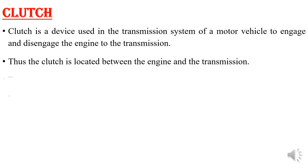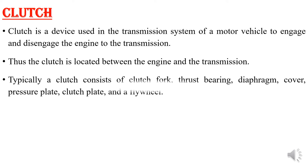Typically the clutch consists of a clutch fork, thrust bearing, diaphragm, cover pressure plate, clutch plate, and a flywheel. These are the constituents of your clutch device.